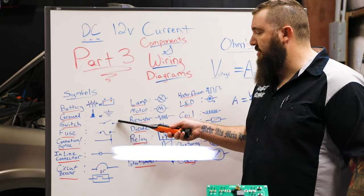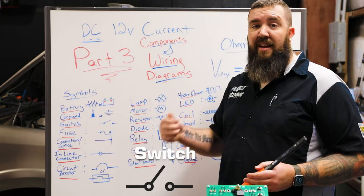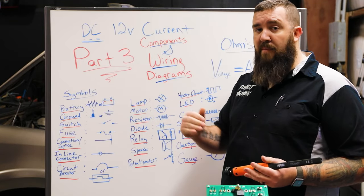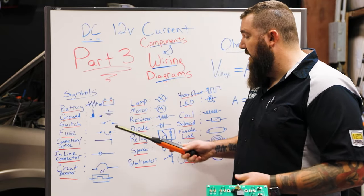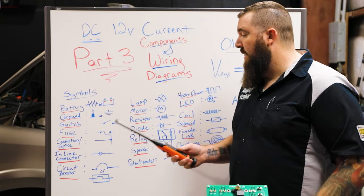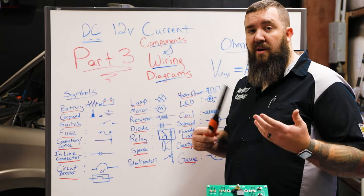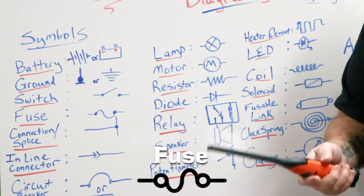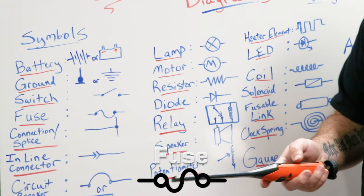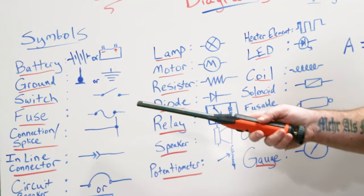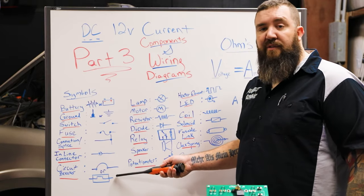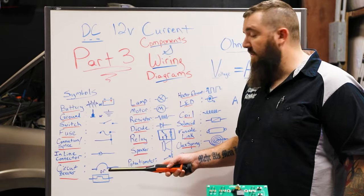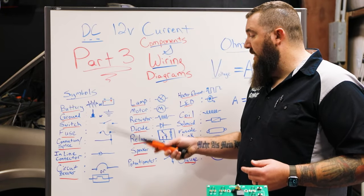We've got a switch — this is going to be generally like an ignition switch or a lock switch on your door, some of those momentary on-off switches. We also have to have our circuit breakers or our fuses within this system to be able to provide safety for overload conditions. We've got the fuse right there, and then we also have circuit breakers, which are going to be represented by one of these two symbols.